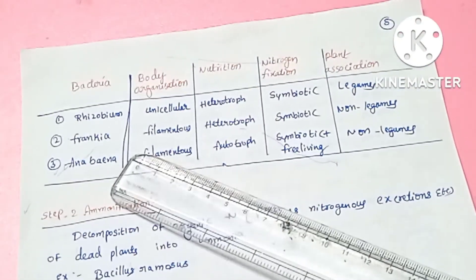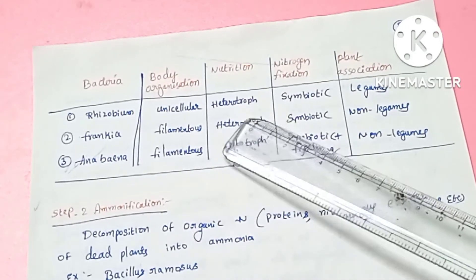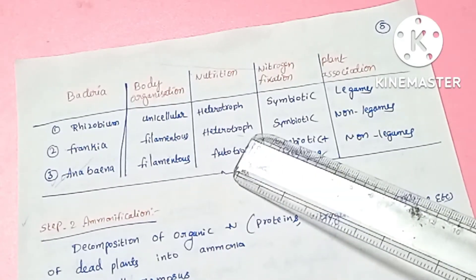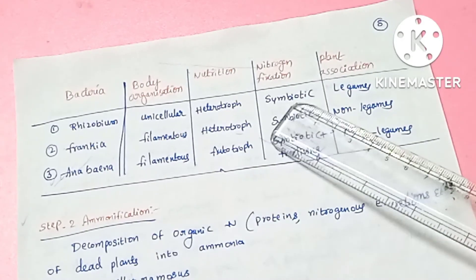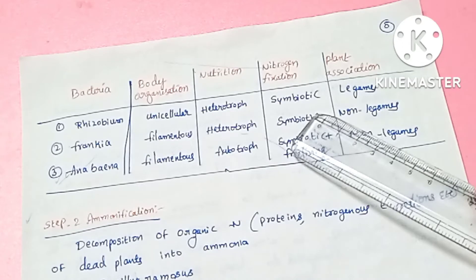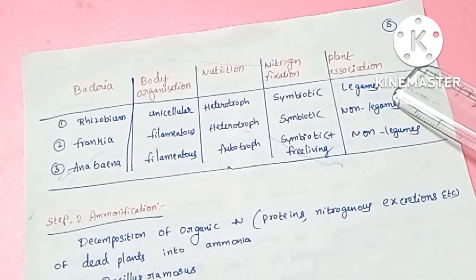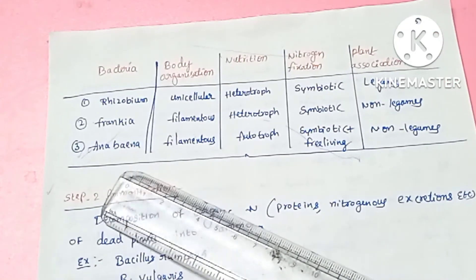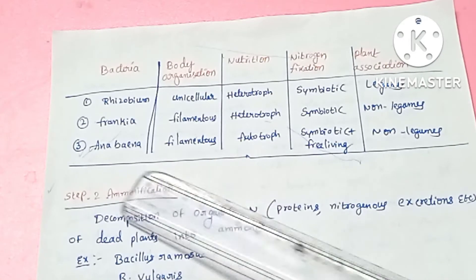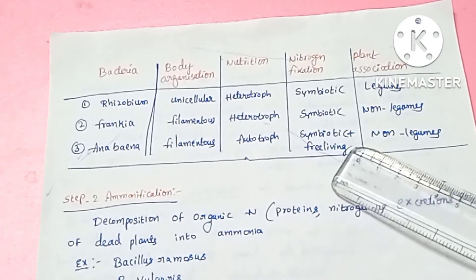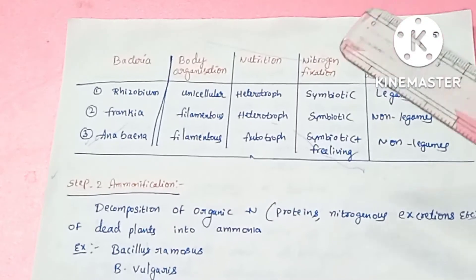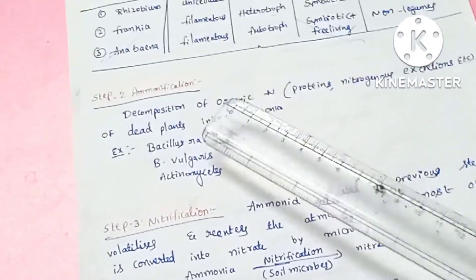Rhizobium is unicellular, heterotrophic bacteria forming a symbiotic association. Frankia is also heterotrophic and forms a symbiotic association with non-leguminous plants. Cyanobacteria are filamentous and autotrophic — they have chloroplasts and can be both symbiotic and free-living. In paddy fields, non-leguminous plant nitrogen fixation also occurs through cyanobacteria.